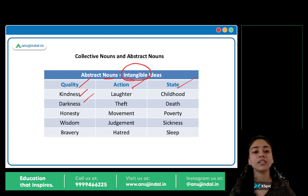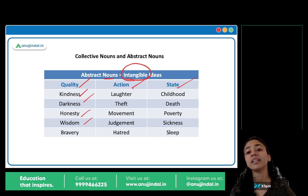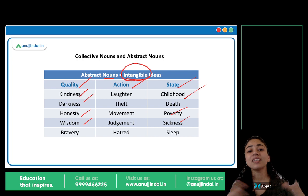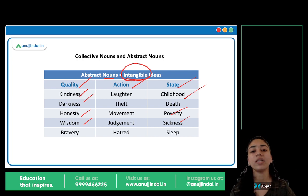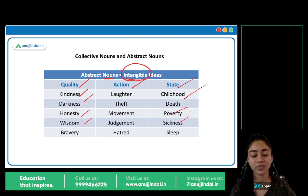Toh kindness, darkness, honesty, wisdom, bravery, laughter, theft, movement, judgment, hatred, childhood, death, poverty, sickness — these are abstract ideas or intangible ideas. Toh inhe — in qualities, actions ko — bolte hain abstract nouns.